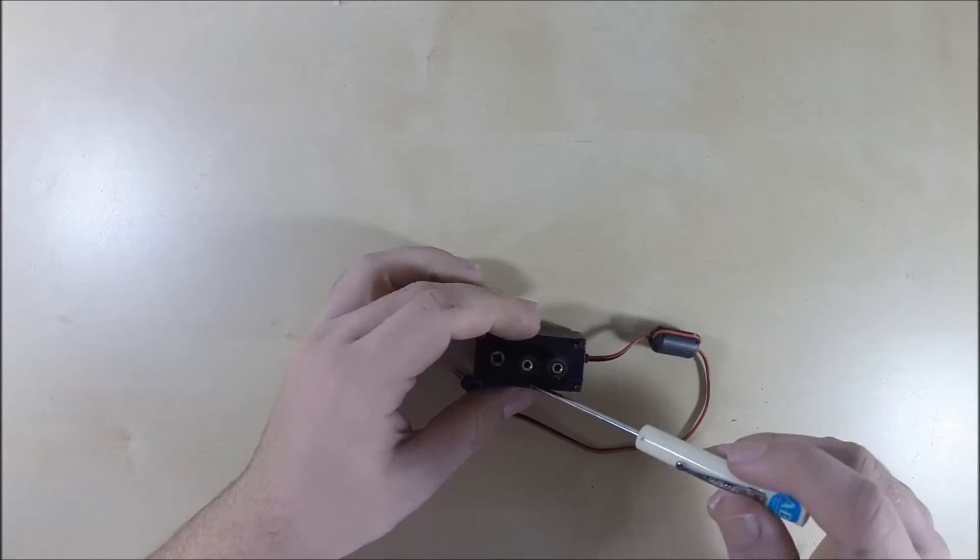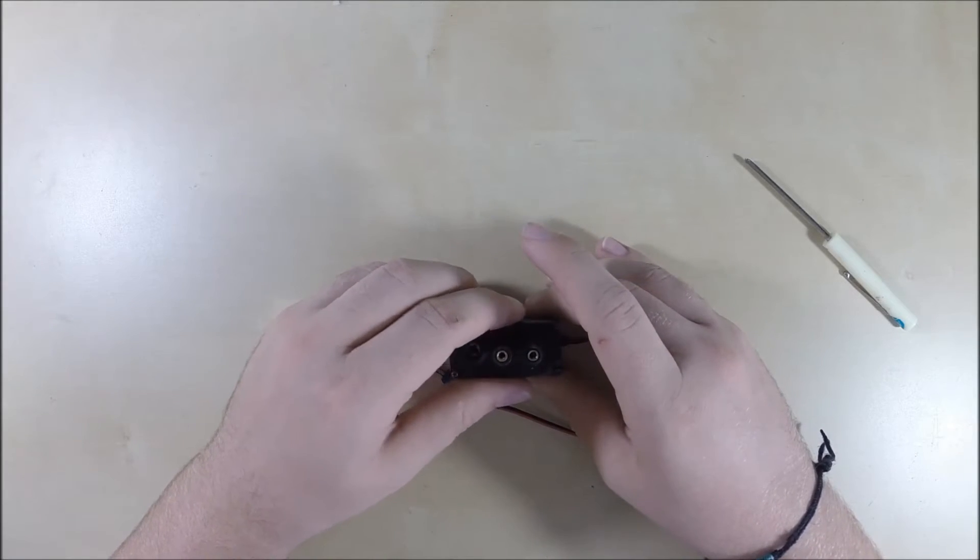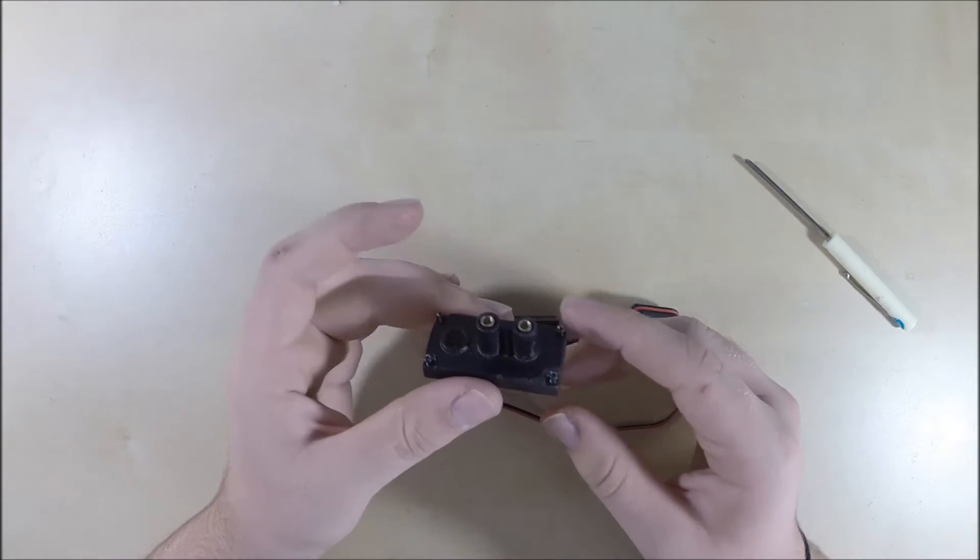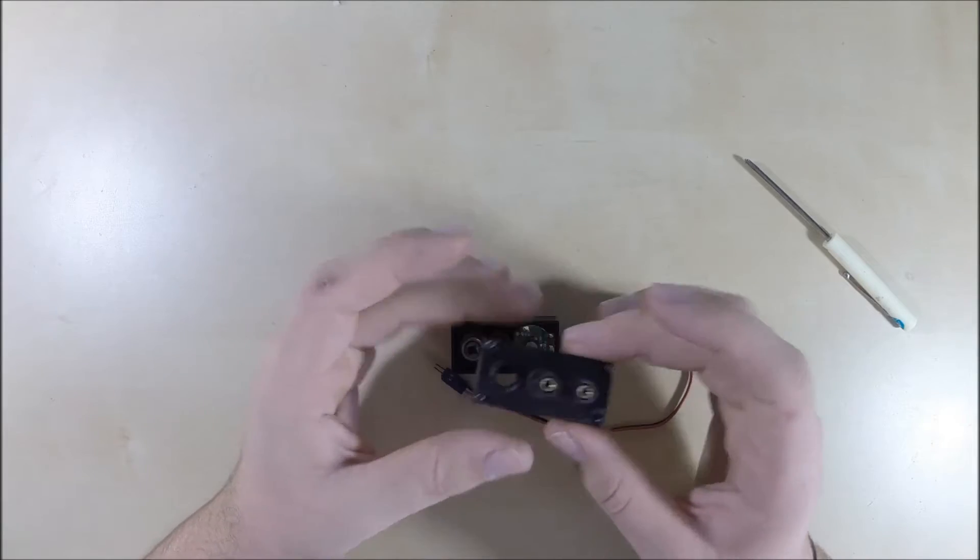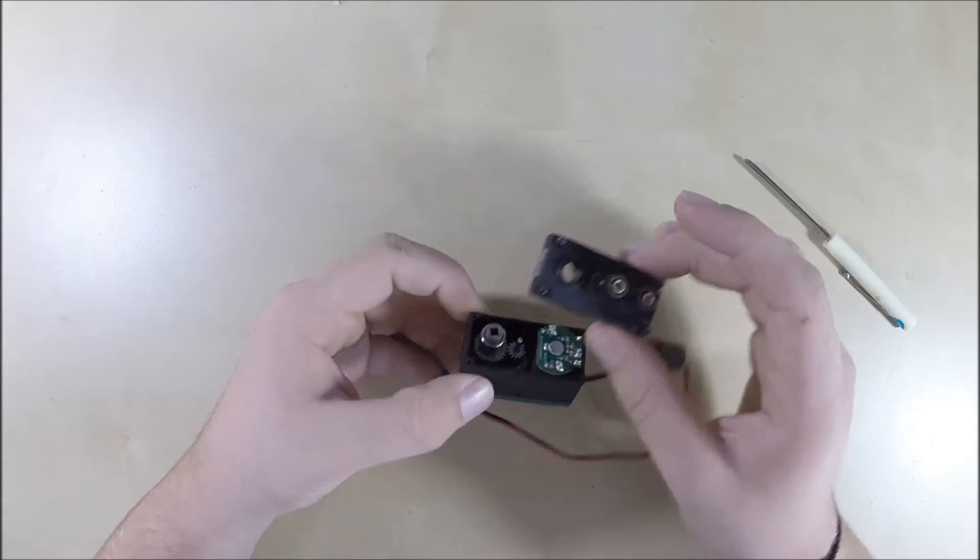But this is how you change the gears, because there's three internal gearings we can change here. So if we take those screws out, loosen them up, we can take the top off. We want to take the top off with the screw side on it, not the back.